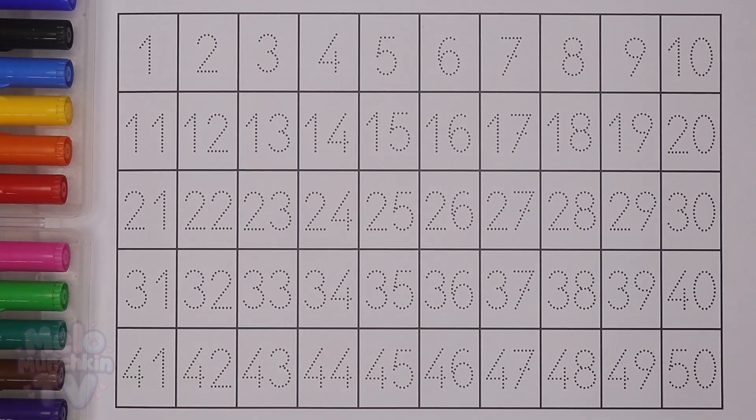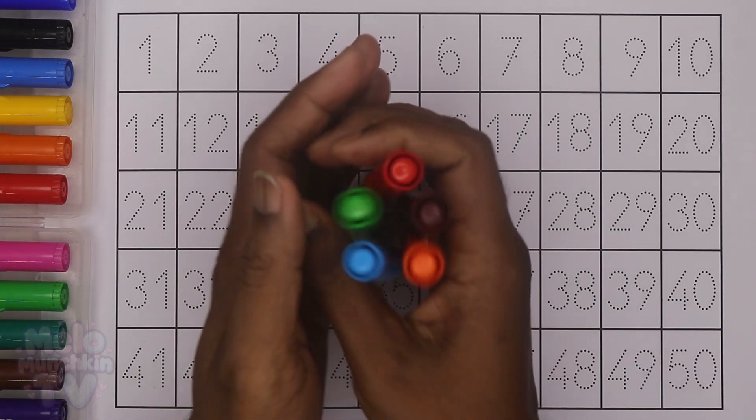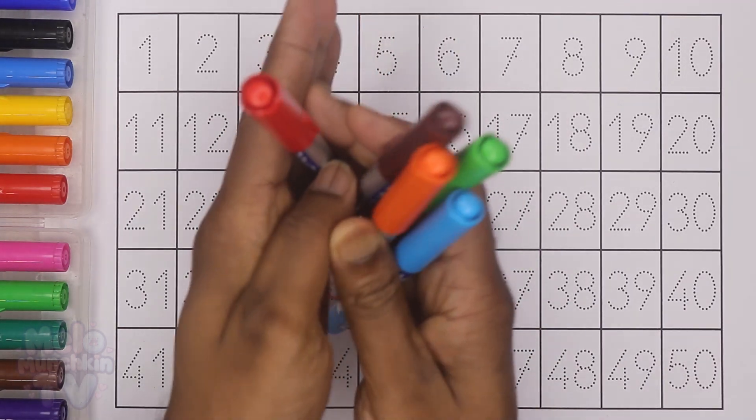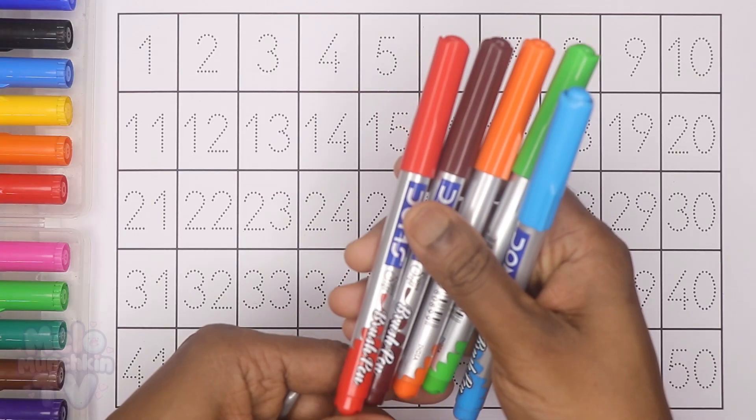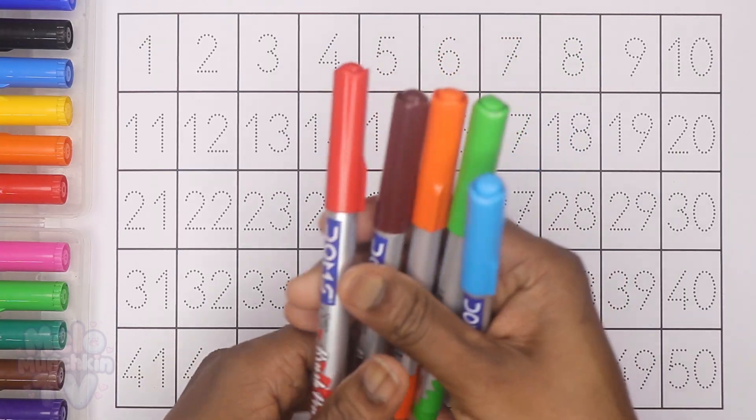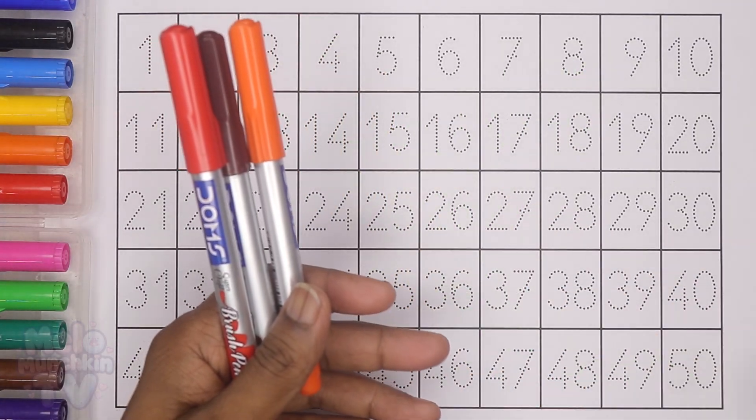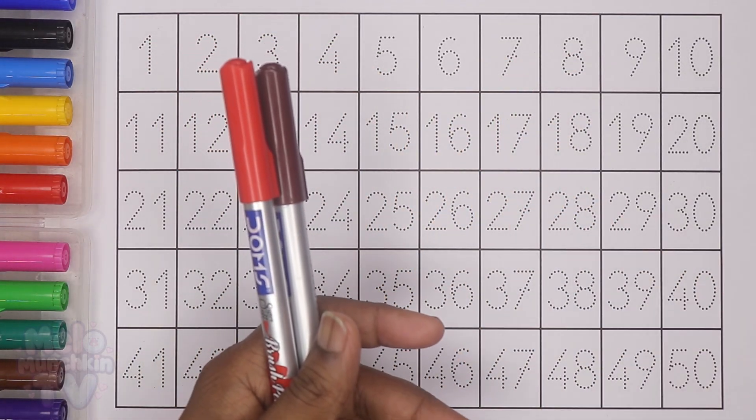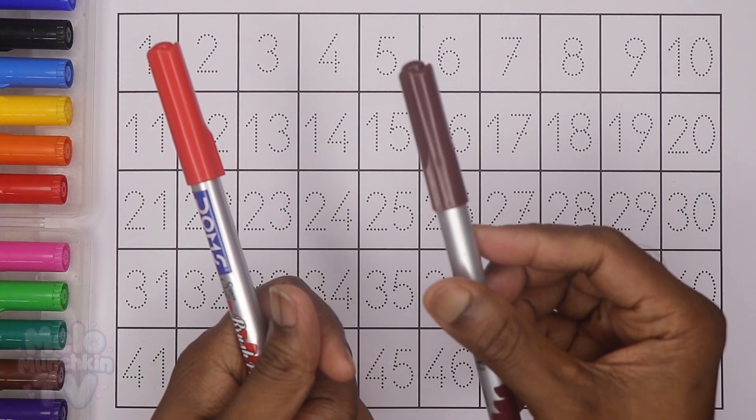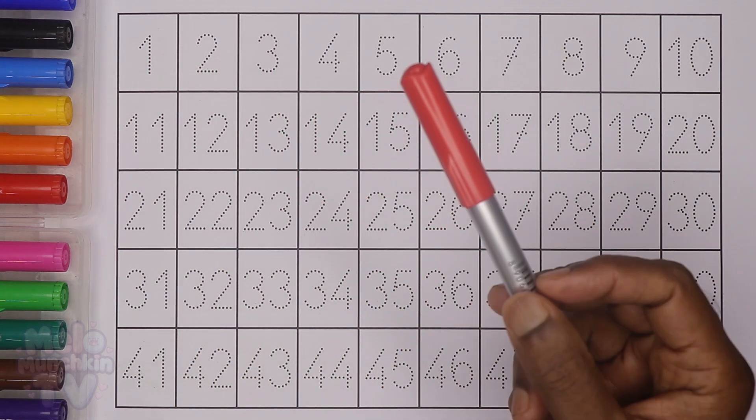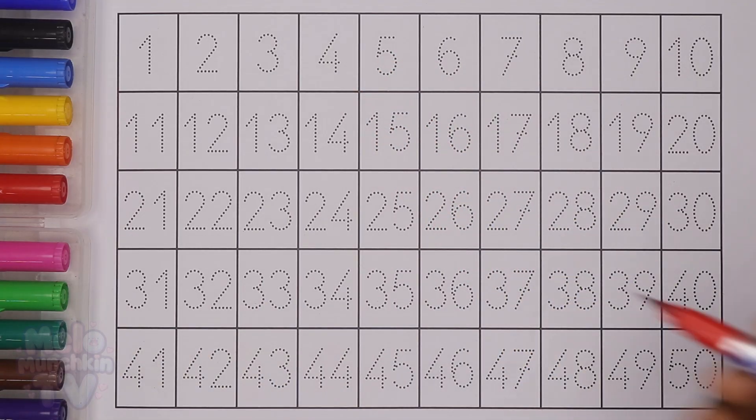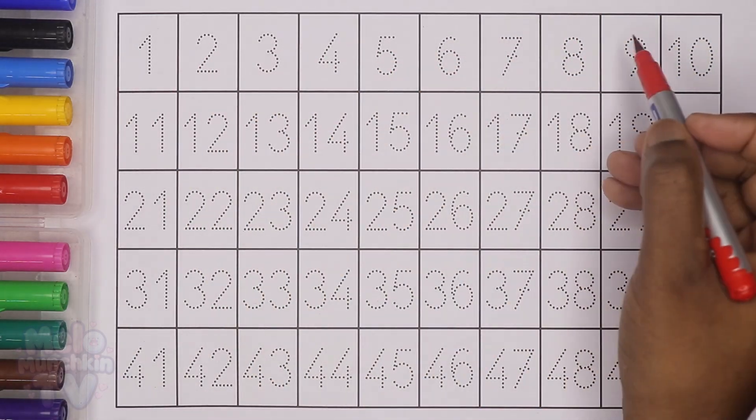Hello kids! Today in this video we are going to learn numbers from 1 to 50. I'll take five colors for each line. These are the five colors I'll use to write the numbers: blue color, green color, orange color, brown color, and red color.